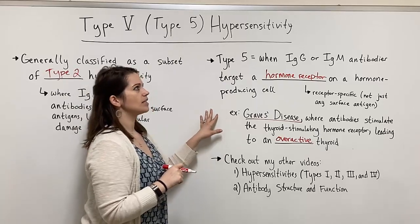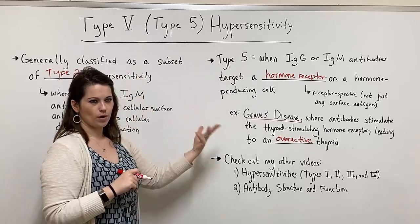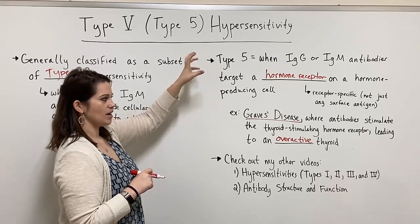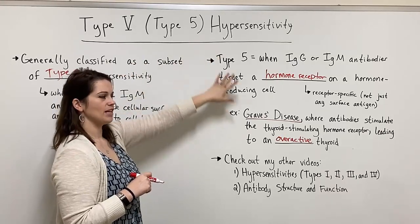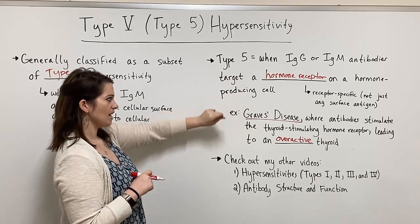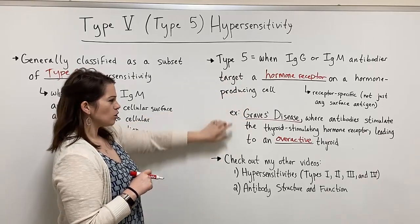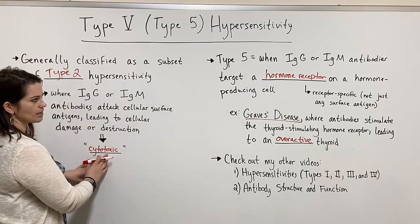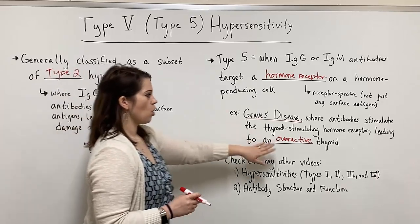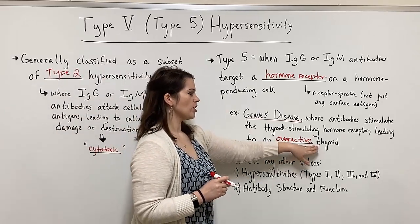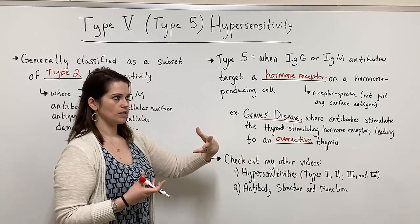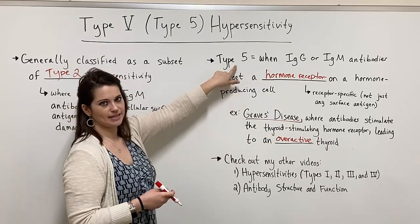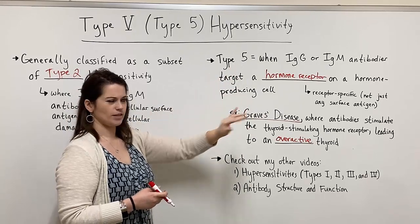But in some situations — I think it's a little bit more prevalent over in Great Britain — you might see type 5 being not a subset of type 2, but its own classification of hypersensitivity. I also want to point out that whereas type 2 is associated with a cytotoxic effect, an overactive thyroid is certainly not a good thing, but it's not necessarily resulting in a lot of cellular destruction — which is another reason why this might be set aside as a separate type of hypersensitivity.